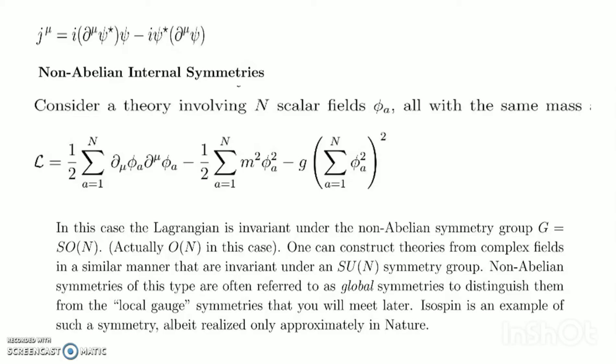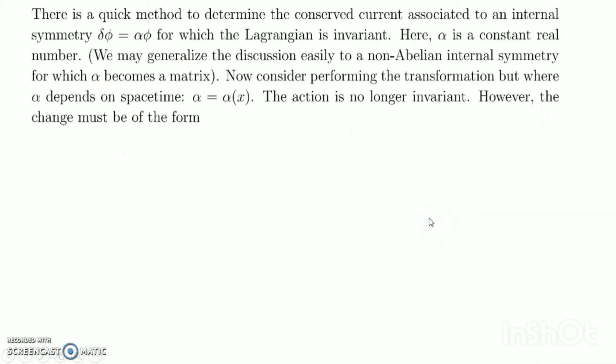Non-Abelian symmetries of this type are often referred to as global symmetries, to distinguish them from local gauge symmetries. Isospin is an example of such a symmetry, albeit realized only approximately in nature. Local gauge symmetries I will explain in a later video, as local gauge symmetry is very important.